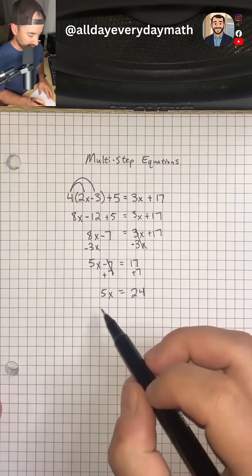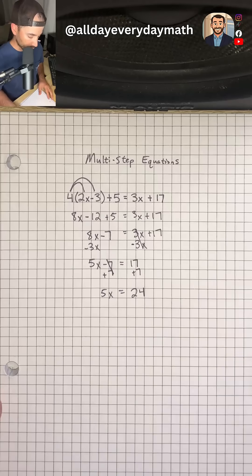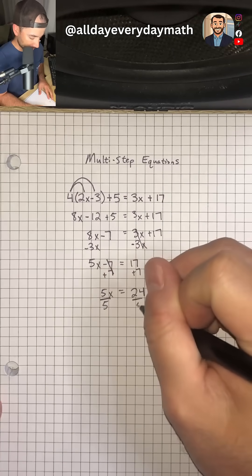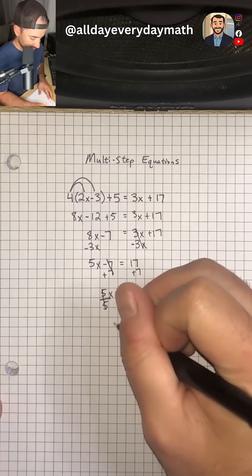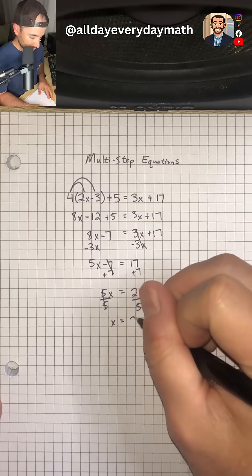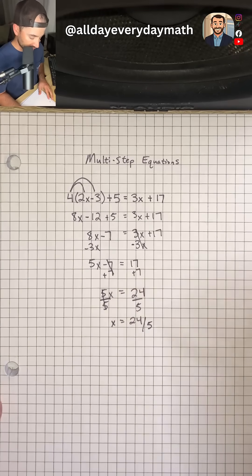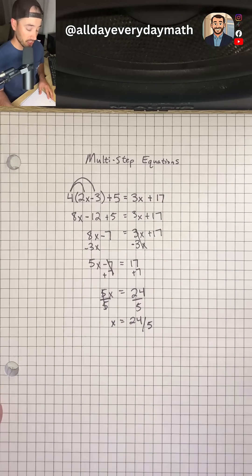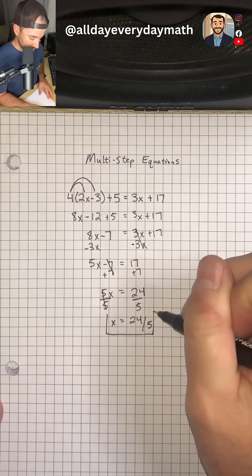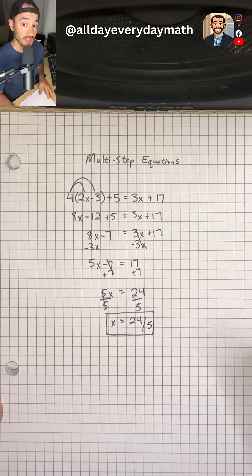And then we have 5 times x is equal to 24. So we're going to divide by 5 on both sides to get x is equal to 24 over 5. And we can't reduce that any further. So that will be our final answer. And that is all you have to do.